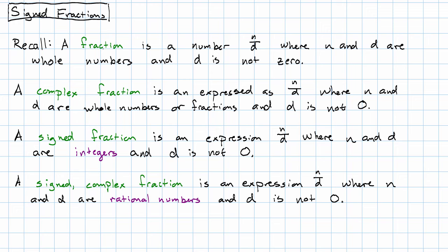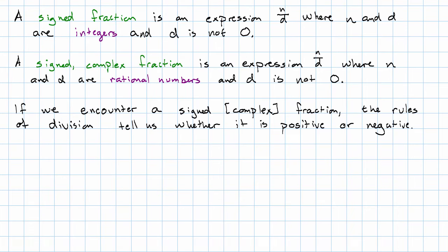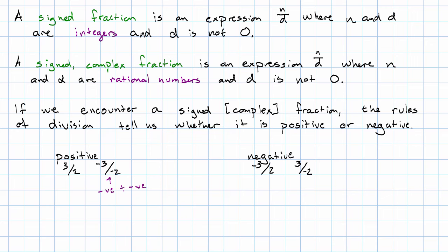What do we do with a signed fraction? If we encounter a signed fraction or a complex fraction, the rules of division tell us whether it's positive or negative. For example, three halves is positive. Negative three over two — negative three halves — is negative. Positive three over negative two is also negative. But negative three over negative two is positive, because it's a negative number divided by a negative number.